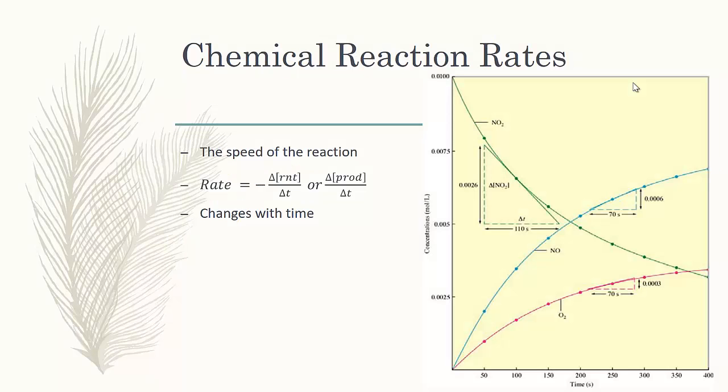How quickly a reactant is used up or how quickly a product appears changes as the reaction occurs. As a reaction occurs, more and more of your reactants are used up. And when they're gone, they're no longer able to react. Therefore, the rate of a reaction slows down as more and more reactants are used up.